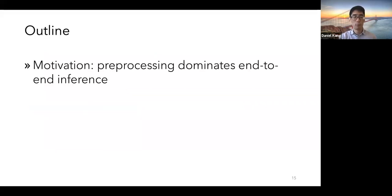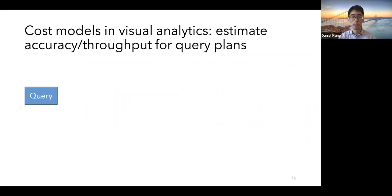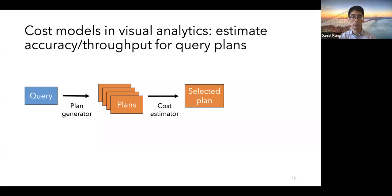Now that I've described the motivation for why we care about pre-processing, I'll describe our system Smol. I'll first describe my cost modeling for visual analytics. I'll describe how to jointly optimize processing and inference, and then I'll conclude with our experimental evaluation. First, let's look at cost modeling for visual analytics. The way this works is that given a query, we generate a set of plans and then estimate the accuracy and throughput of various query plans using a cost estimator, and then execute the plan to generate query results.